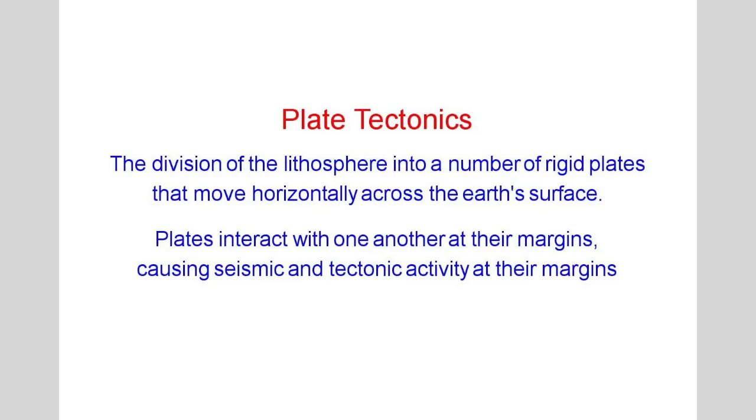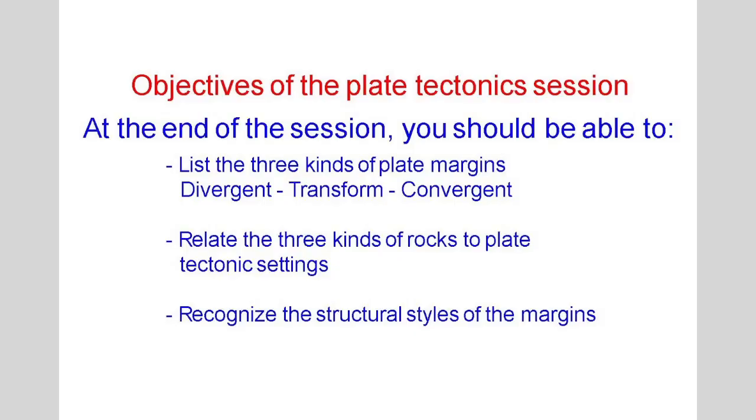One of the topics that we cover is plate tectonics. Plate tectonics is where we divide the outer layer of the earth up into a number of individual plates — 15 different plates — that are moving across the surface of the earth. The specific definition: the division of the lithosphere into a number of rigid plates that move horizontally across the surface of the earth. The plates interact with each other at their margins causing seismic and tectonic activity. The seismic activity is related to earthquakes; the tectonic activity is related to the building of mountains. The things we want people to take away from this session is that there are three kinds of plate margins.